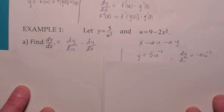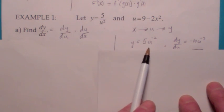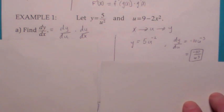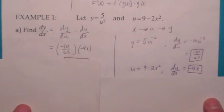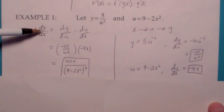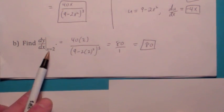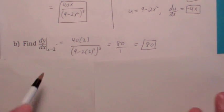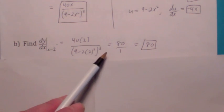What is dy/du? If y equals 5 over u squared, which can be written as 5u to the negative 2, the derivative becomes negative 10u to the negative third, which is negative 10 over u cubed. And what is du/dx? If u is 9 minus 2x squared, du/dx is negative 4x. So when you paste those two together, you get this. We're going to write our answer in terms of x, because dy/dx implies the derivative of y with respect to x. For part b, they want you to find dy/dx when x equals 2 — just plug in 2 everywhere there's an x. When you take the formula from part a and plug in 2, it simplifies to 80.